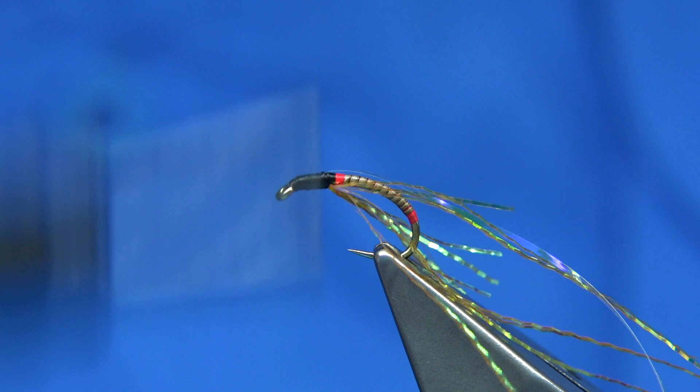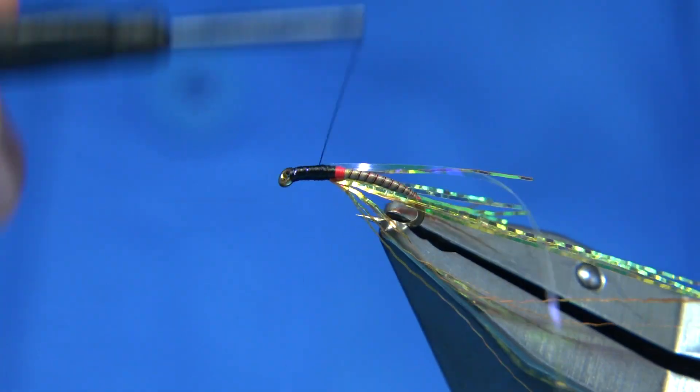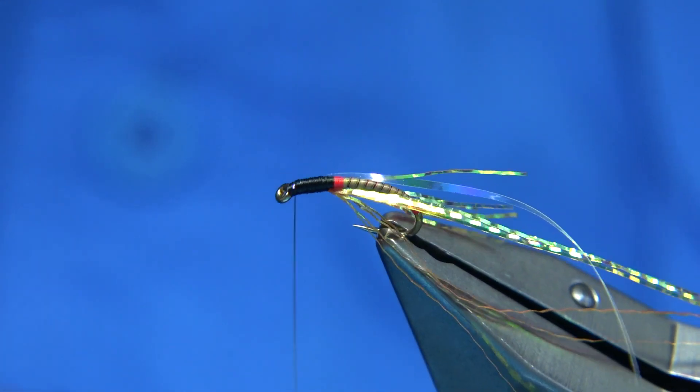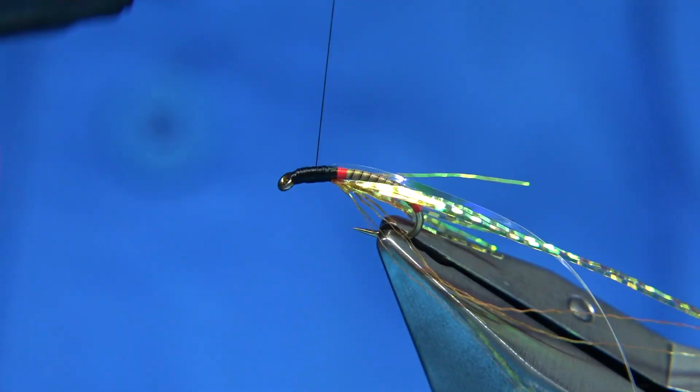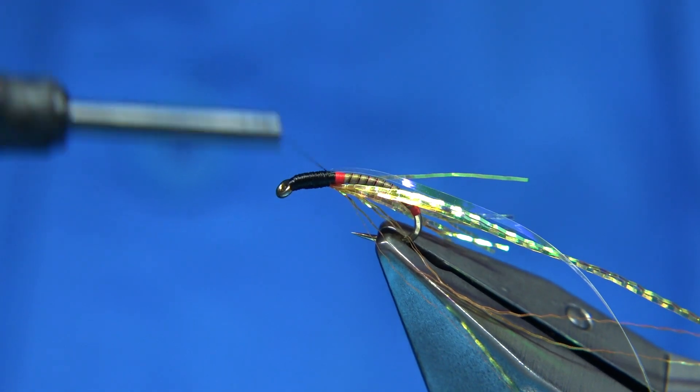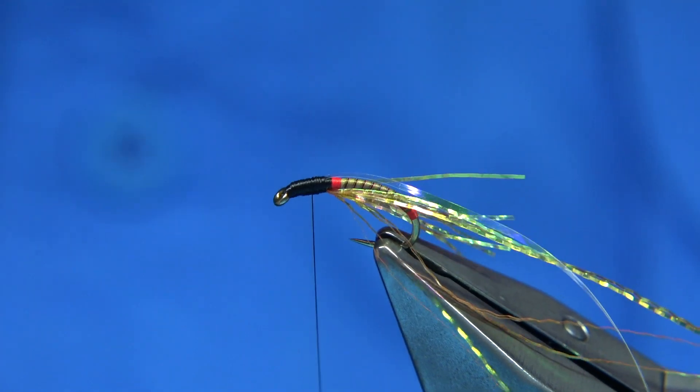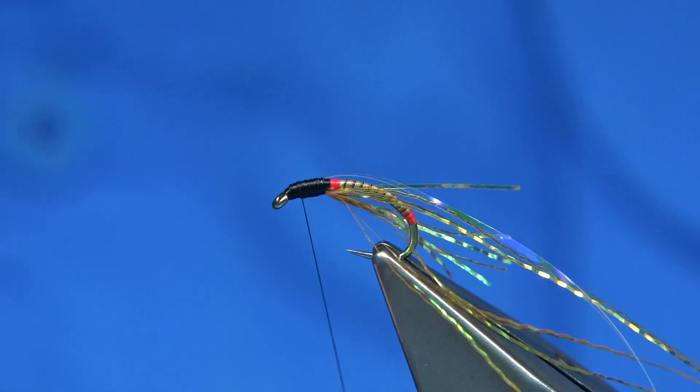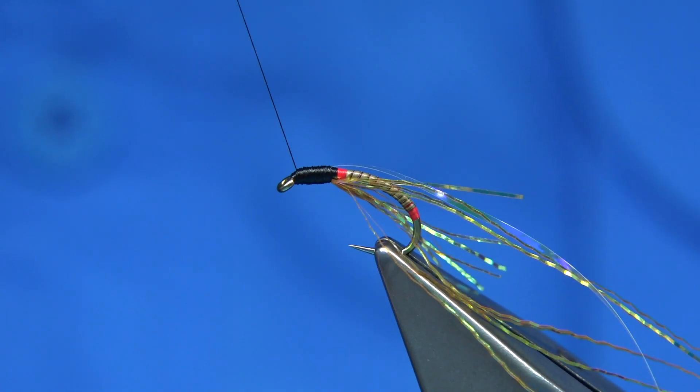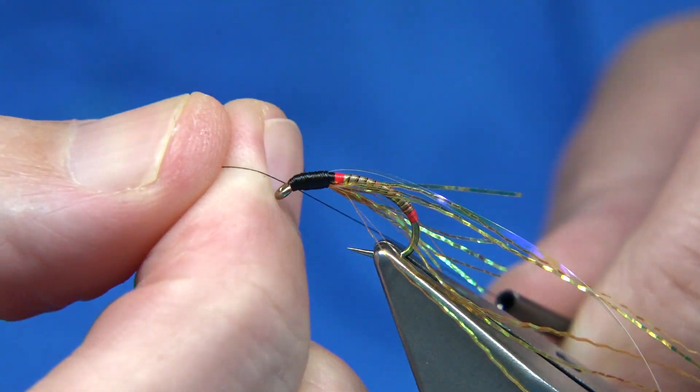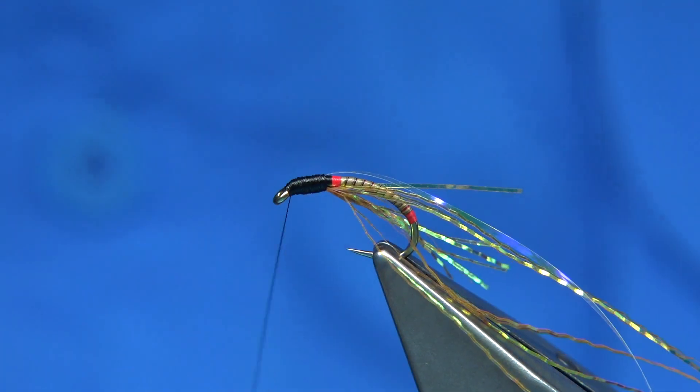Now I'm just going to build up the thorax. That should do it. Now what I'm going to do here is just put a wee half hitch in, just so the thread doesn't bounce off.